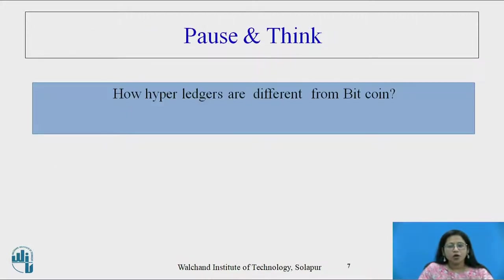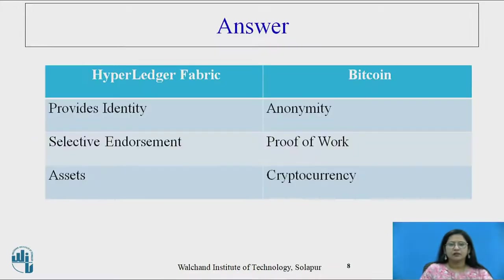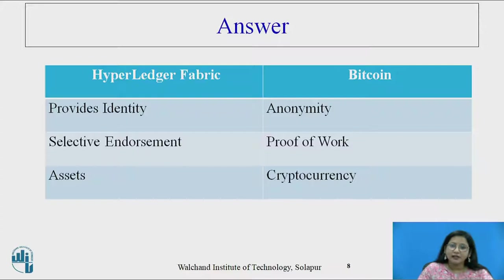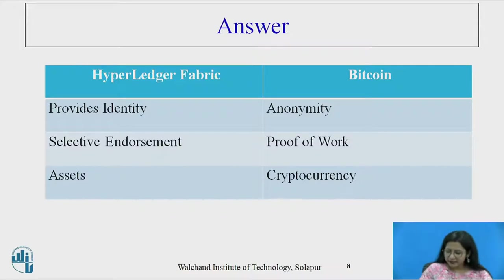Please pause the video and think about how Hyperledger Fabric is different from Bitcoin. Hyperledger Fabric provides identity, while Bitcoin provides anonymity. Hyperledger Fabric uses selective endorsement, while proof of work is present in Bitcoin. For Hyperledger Fabric, assets are used, while for Bitcoin, cryptocurrency is used.